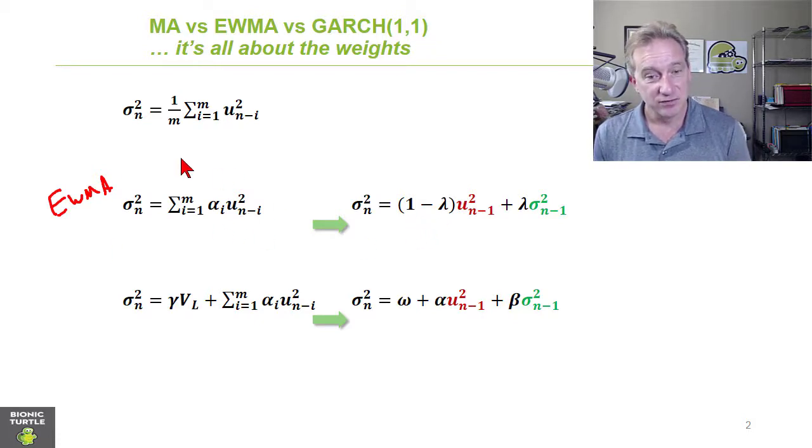So there's an infinite variety of these versions of the variance estimate where each of the weights are different. But if we decide to use the special case where the weights decline exponentially at a ratio of lambda, then we have the exponentially weighted moving average.